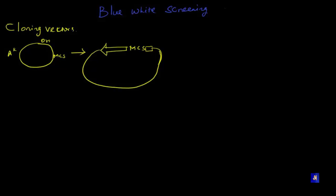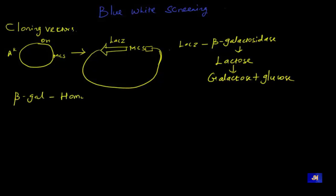In this example we're going to see lac Z, where MCS lies between the lac Z and the peptide sequence. This lac Z codes for beta-galactosidase enzyme. This enzyme acts upon lactose to break it into galactose and glucose. So beta-galactosidase acts on lactose to break it into galactose and glucose - be clear with this point.